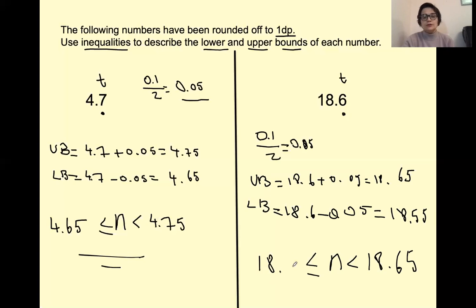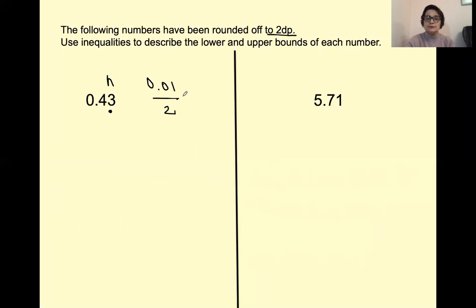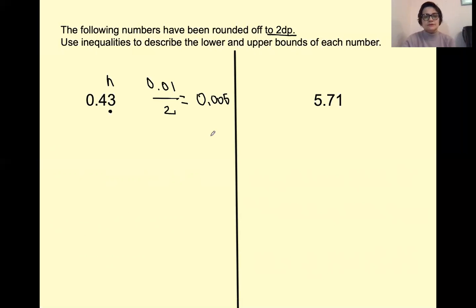Next question: the following numbers have been rounded off to two decimal points. This is the second decimal point, so it's not digit three — the place value of digit three is going to be not the tenths, it's going to be the hundredths, so it is 0.01. Divided by two, the answer is going to be 0.005.